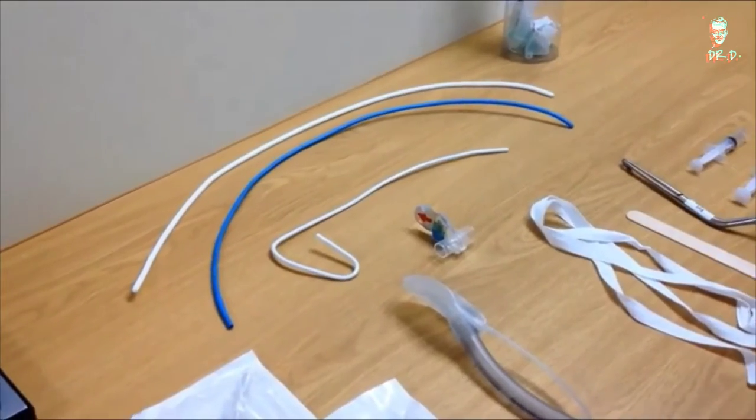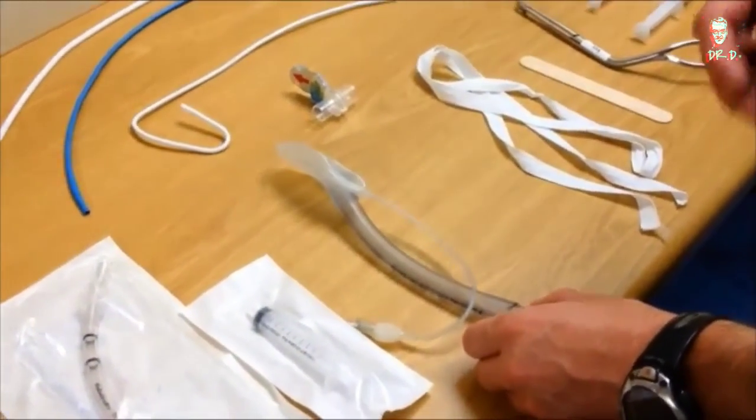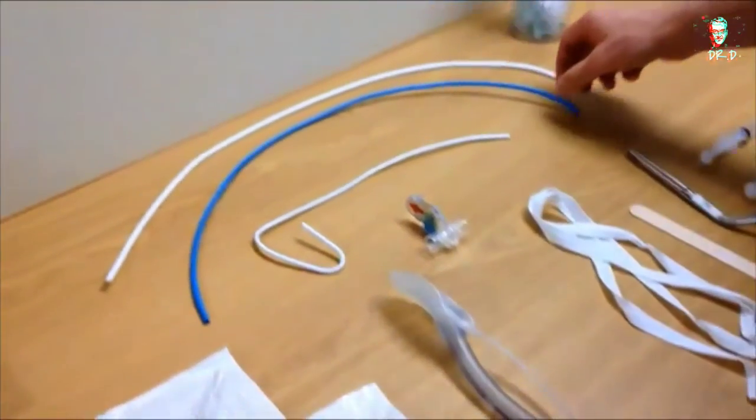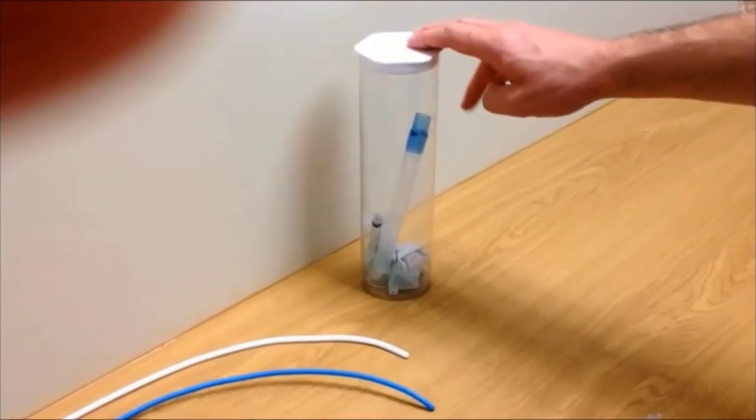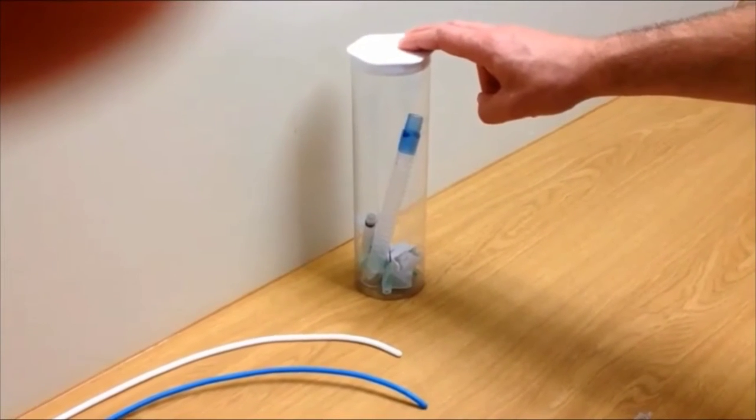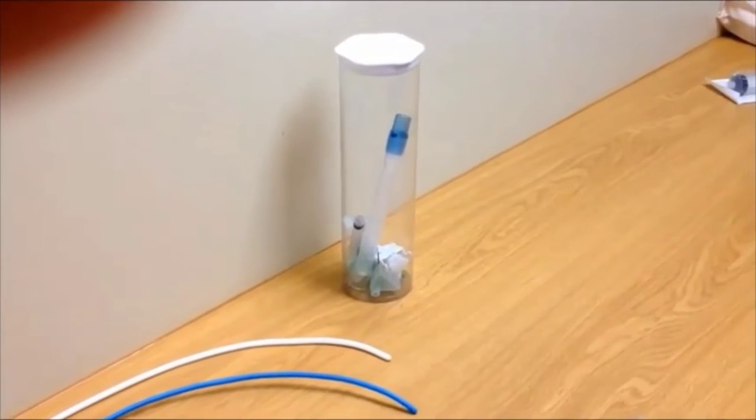We suggest a minimum of the following: a supraglottic device such as a laryngeal mask airway, a selection of long stylets or gum elastic bougie, and a surgical airway kit. In this case a tracheostomy kit. You could also have a surgical cricothyroidotomy kit available.